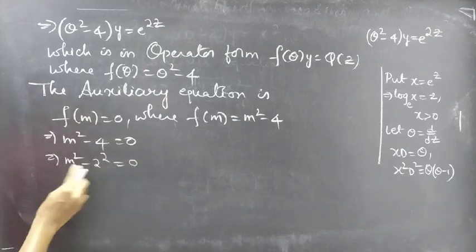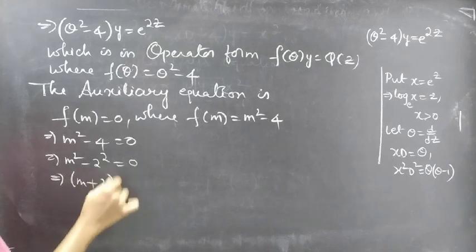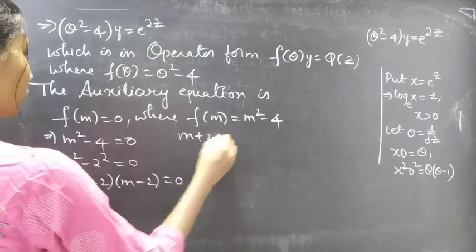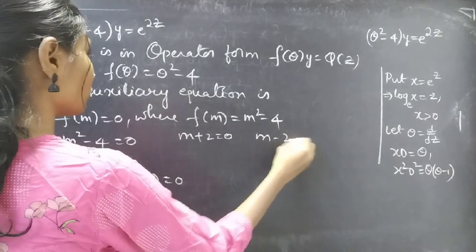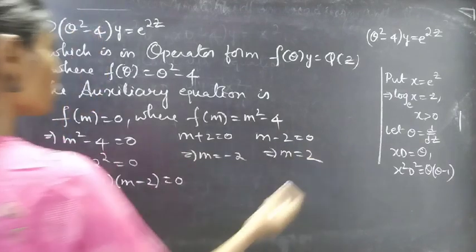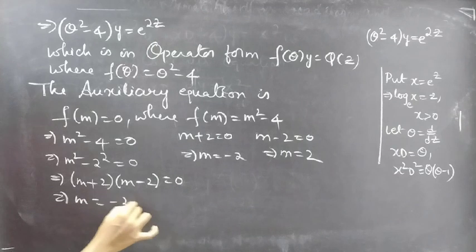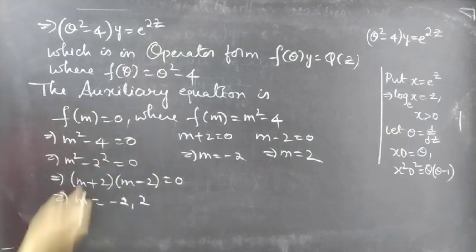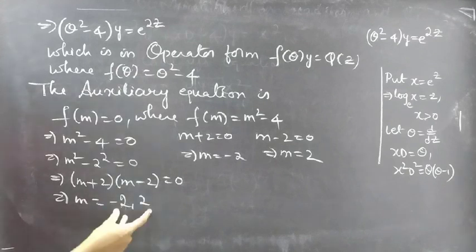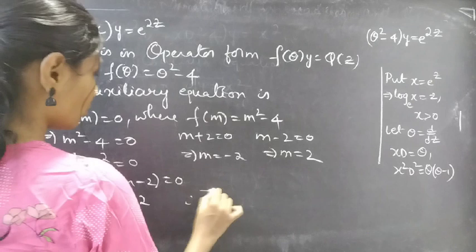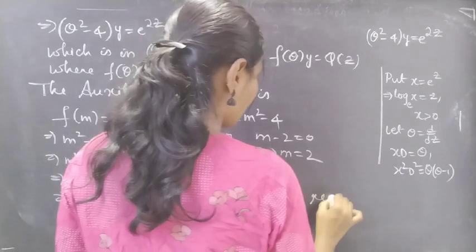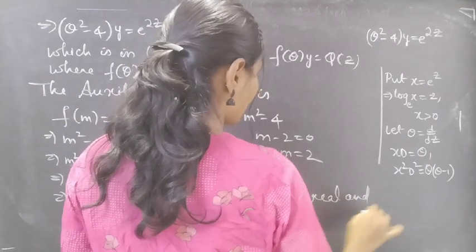We can write 4 as 2 squared, so this is in the form a squared minus b squared, which factors as a plus b times a minus b equals 0. Equating each factor to zero: from m plus 2 equals 0, m equals minus 2; from m minus 2 equals 0, m equals 2. So m equals minus 2 and 2 are the roots — real and distinct.